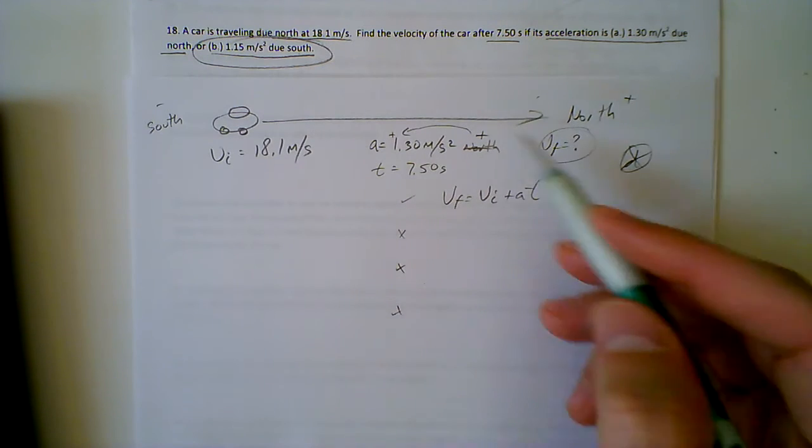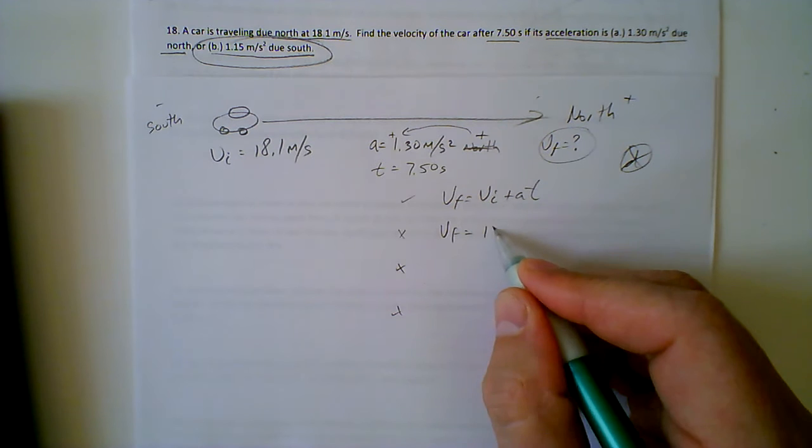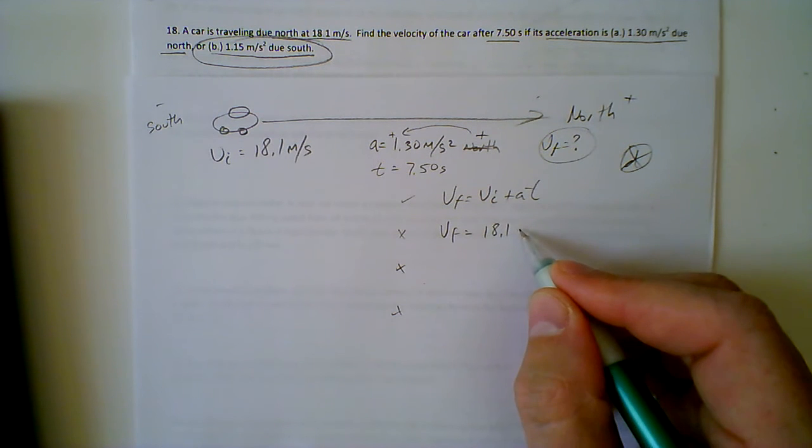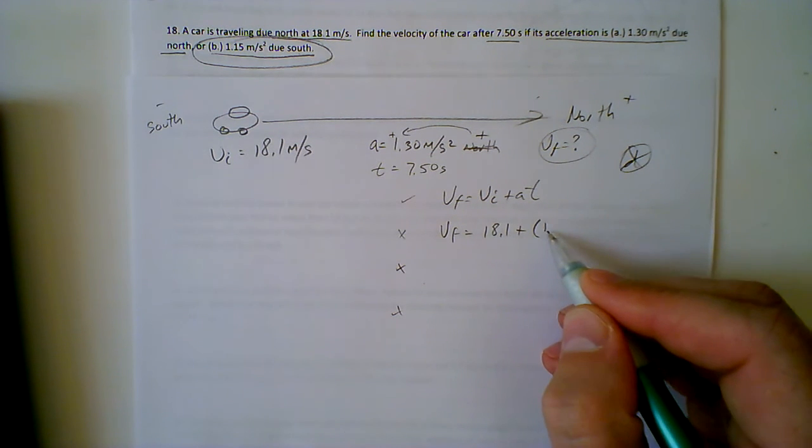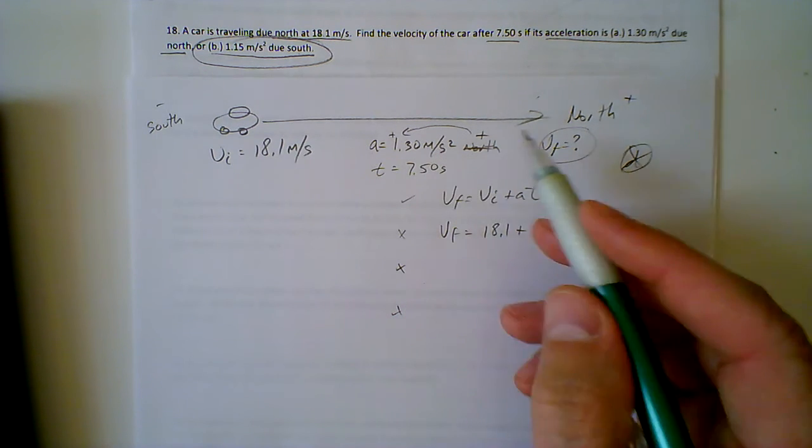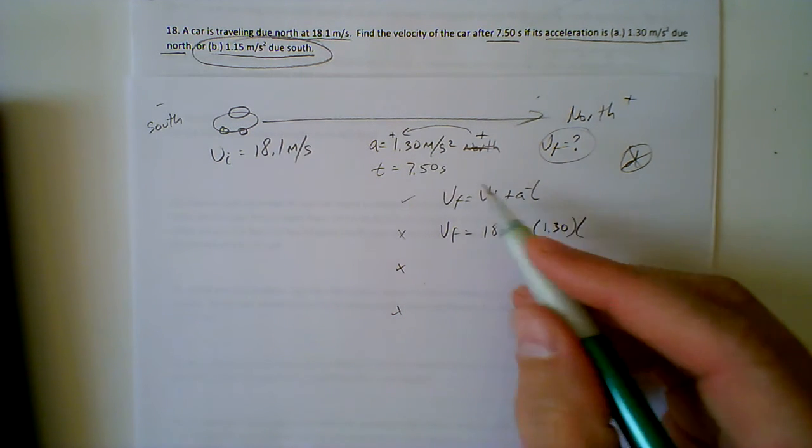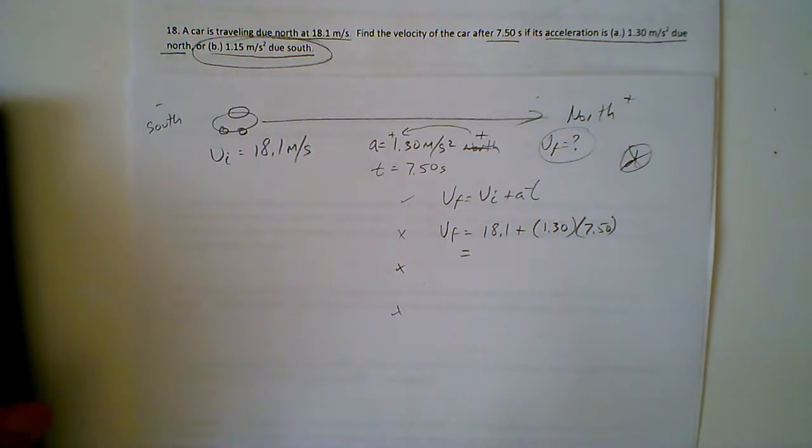Now it's already rearranged, we're solving for vf. So vf equals vi, you're starting at 18.1 meters per second, and that is going to change by at 1.30, acceleration of 1.30 meters per second every second. The time that's going to occur for is 7.50 seconds, and we do the math.